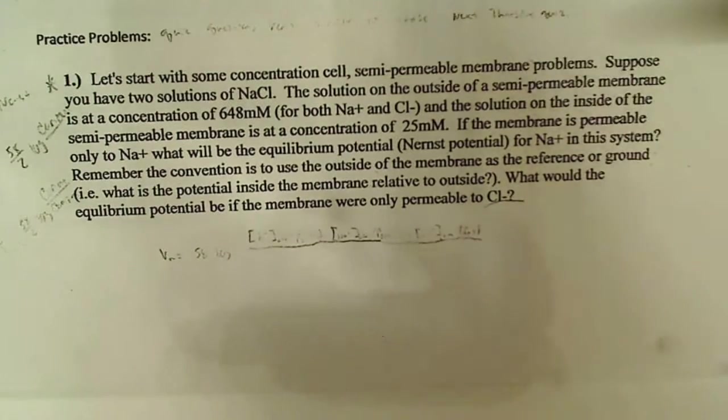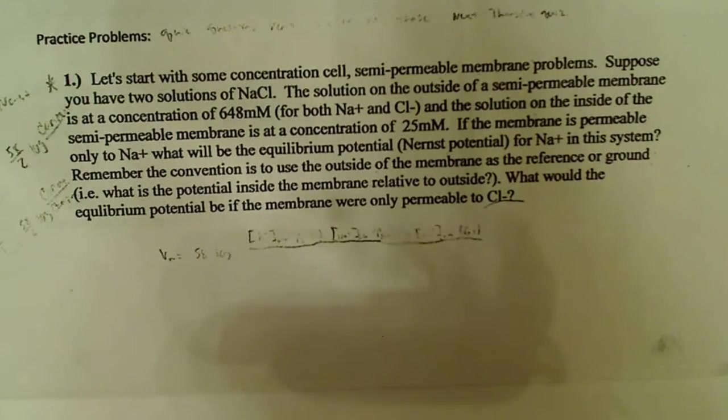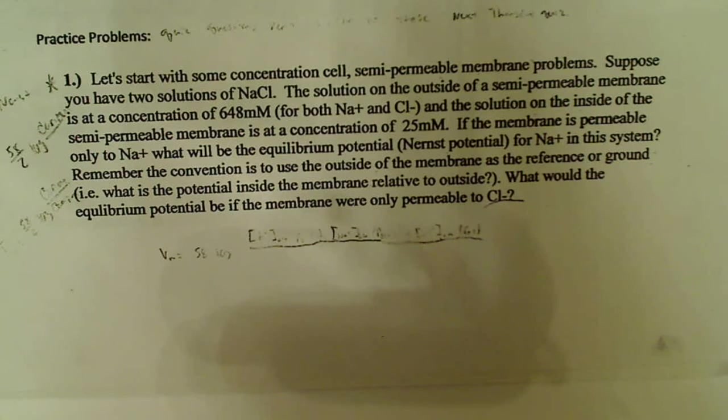So, I have two solutions of NaCl. The solution on the outside of a semipermeable membrane is at a concentration of 648 millimoles for both Na+ and Cl-, and the concentration on the inside of the semipermeable membrane is at a concentration of 25 millimoles. If the membrane is only permeable to Na+, what will the equilibrium potential, or Nernst potential, for Na+ be in the system?